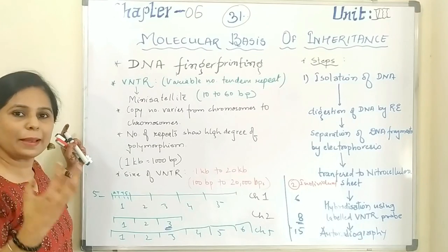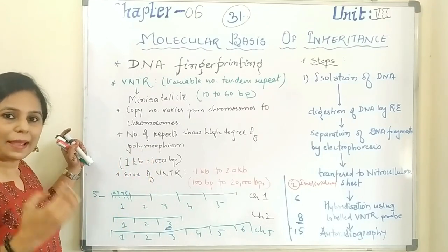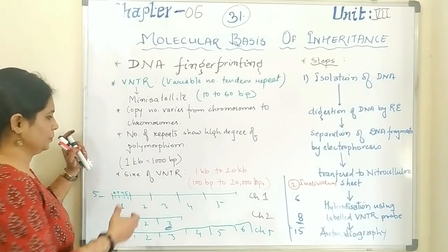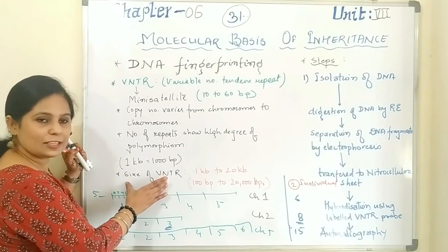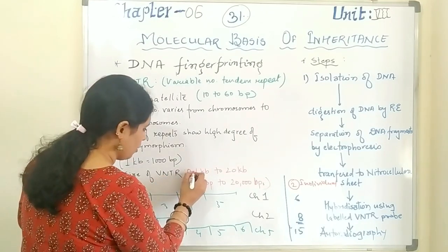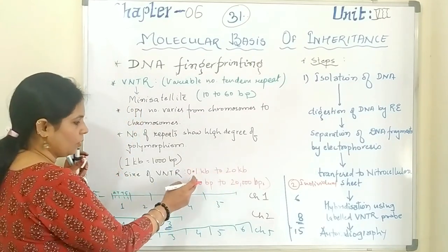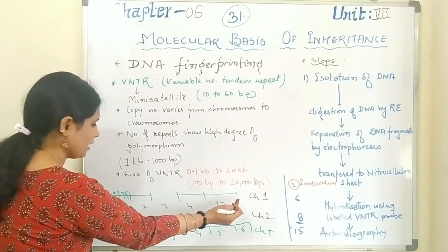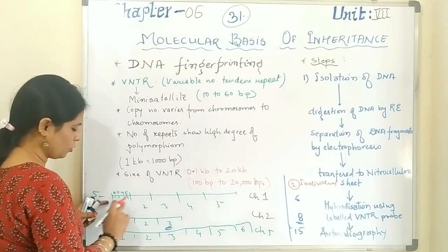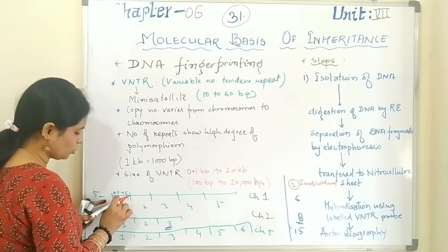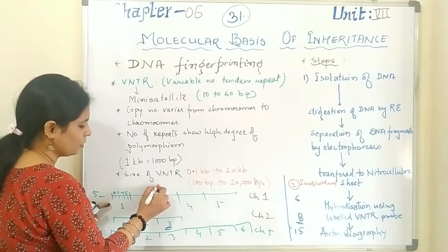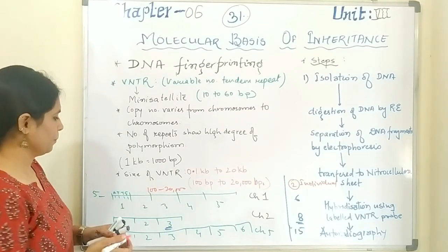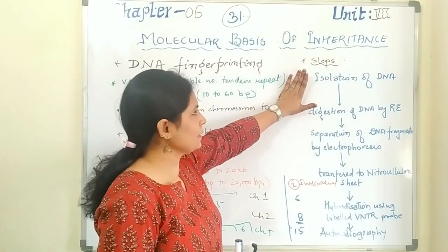The number of repeats shows a high degree of polymorphism. Polymorphism means 'poly' — many, 'morphism' — forms. It shows many different forms: 5 times here, 3 times there, 6 times elsewhere — this is polymorphism. Now, in your textbook it is mentioned that the size of VNTR is 0.1 kb to 20 kb. 0.1 kb means 100 base pairs, and 20 kb means 20,000 base pairs. So the size of a VNTR can range from 100 to 20,000 base pairs.